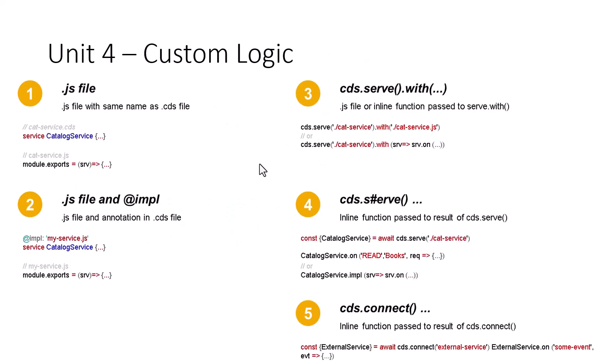In order to write custom logic, we want to create a file with the same name. This file is going to contain the JavaScript logic, and we are going to name it with the same name as the .cds file. This is going to be a manual process, and this is where you're going to be writing the custom JavaScript logic.